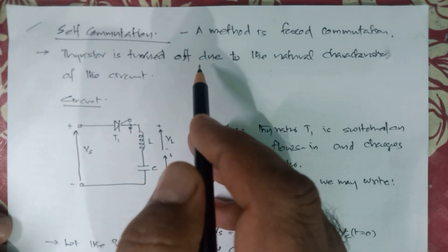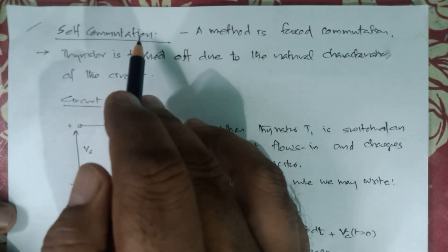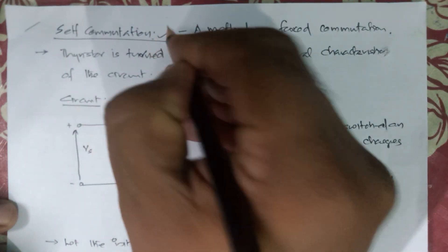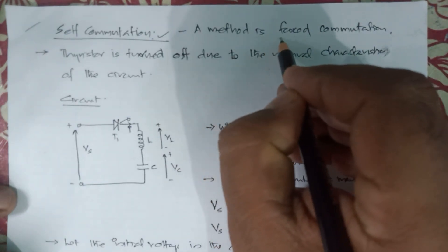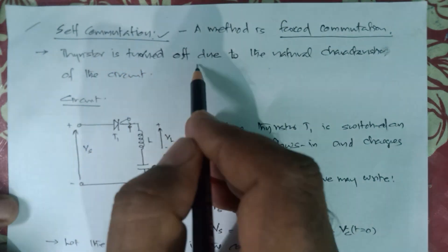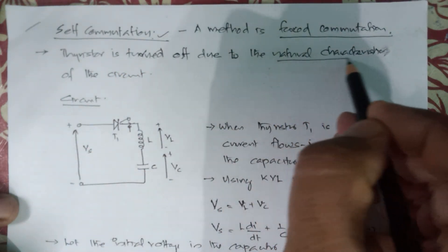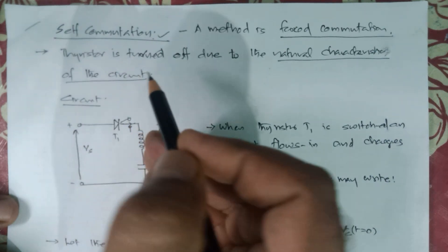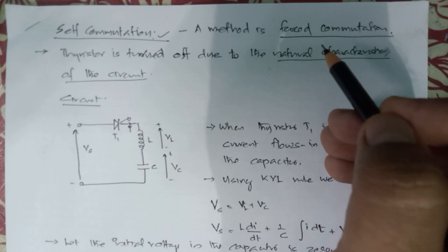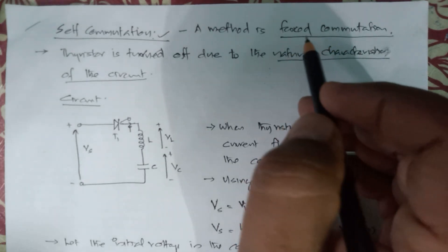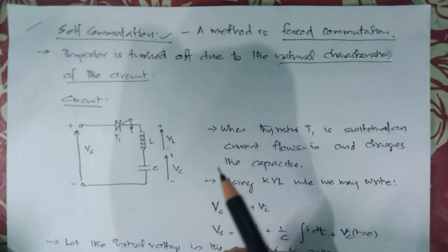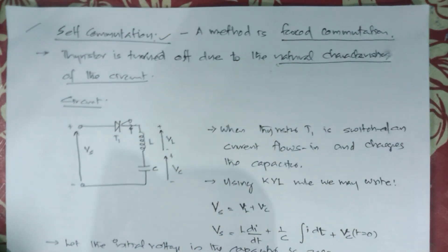In this session, we will talk about a method of commutation called self-commutation. Self-commutation is a method in forced commutation. In this method, the thyristor is turned off due to the natural characteristics of the circuit. No other external impulses or external agencies are needed to switch off the thyristor — the natural characteristics of the circuit itself will make the thyristor switched off or commuted.